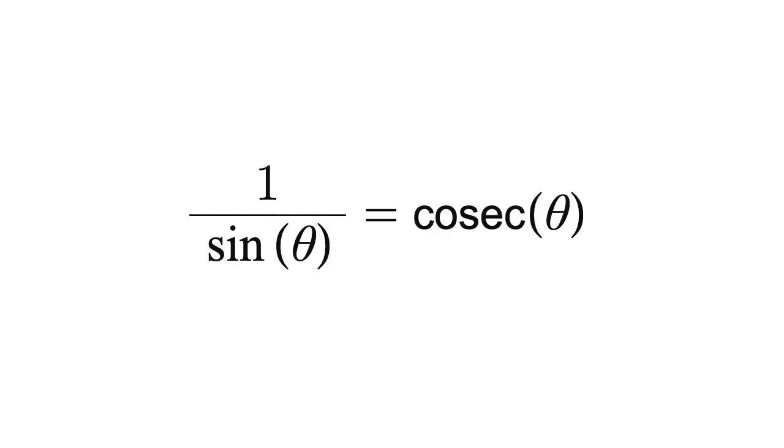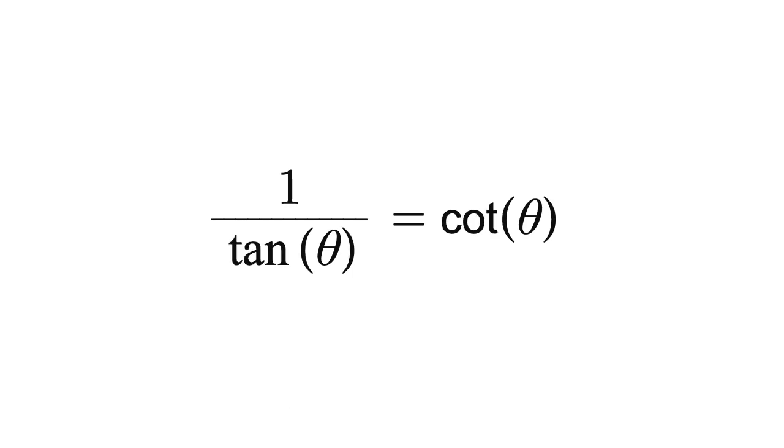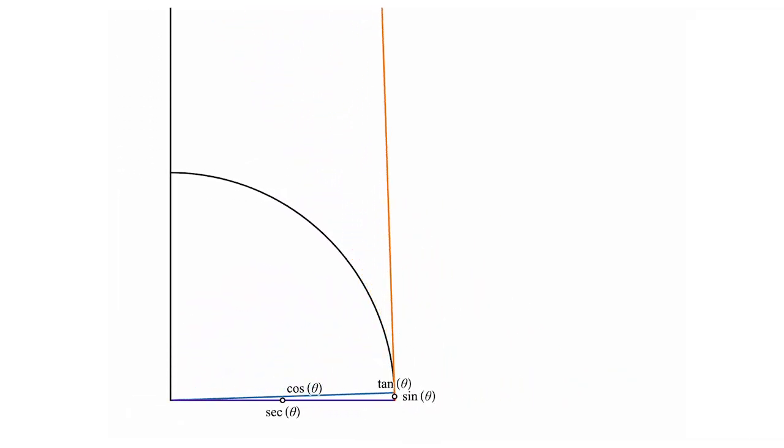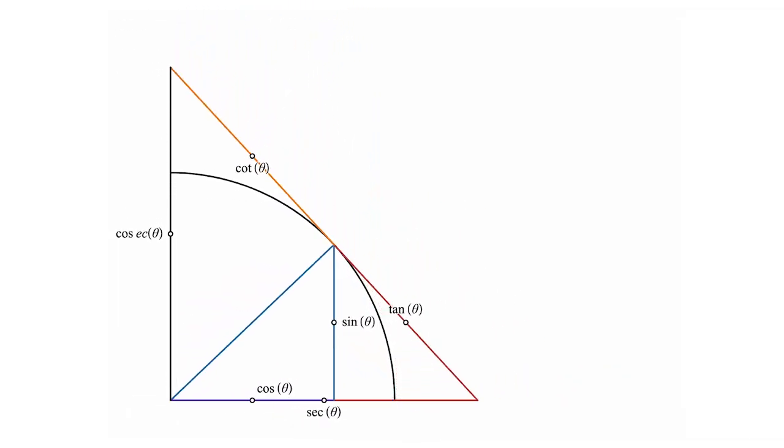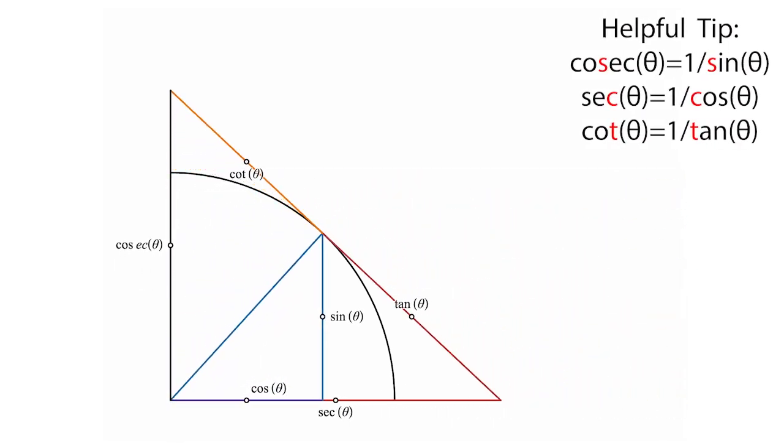1 over sine theta is equal to cosec theta. Cosec is short for cosecant. 1 over cos theta is equal to sec theta. Sec is short for the secant. 1 over tan theta is equal to cot theta, which is short for cotangent. While these names do have meaning, it isn't necessary to uncover it in the Australian curriculum. A great way of remembering the reciprocals is by taking the third letter of each function.